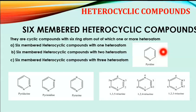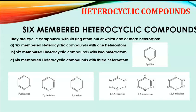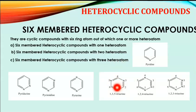The second classification is six-member heterocyclic compounds with two heteroatoms. Examples are pyrimidine, pyridazine, and pyrazine — each contains similar heteroatoms (nitrogen and nitrogen), with only the positions altered. The third classification is six-member heterocyclic compounds with three heteroatoms. Examples are 1,3,5-triazine and 1,2,3-triazine, where a single six-member ring contains three heteroatoms.